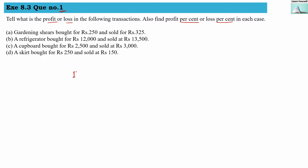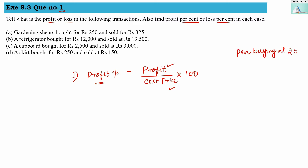The first formula is for finding profit percentage: profit divided by cost price, multiplied by 100. For example, if I am buying a pan at rupees 5, then my cost price (CP) is 5. If I am selling this pan at rupees 7, then the selling price (SP) is 7, and I am profiting by rupees 2. The original price at which we bought the product is our cost price.